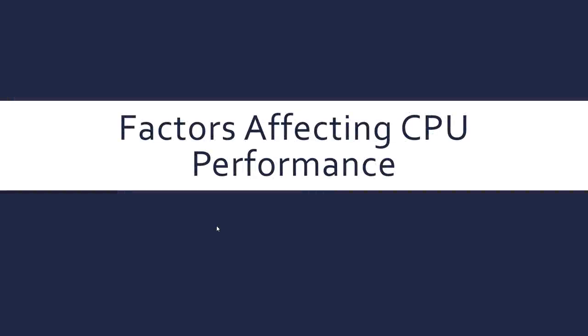Let's now consider some factors that affect the performance of the CPU — performance being how much you can get done in a set amount of time. So if you wanted to upgrade your CPU, what would you change about it to make it better? The first one we've touched on before, which is the clock speed.